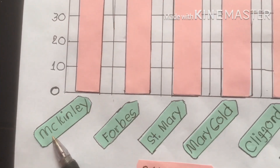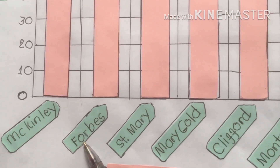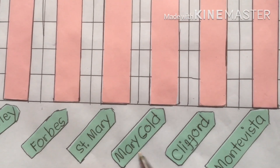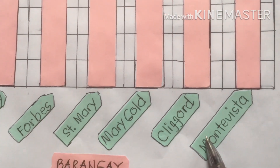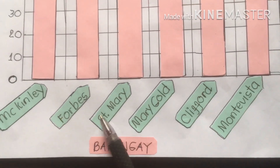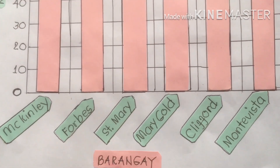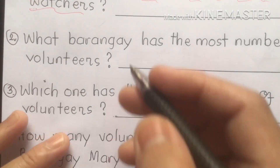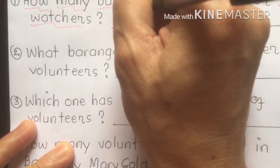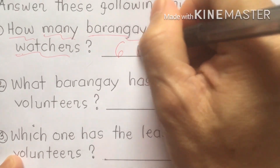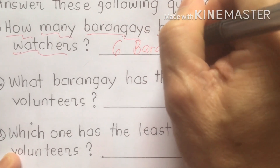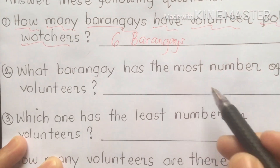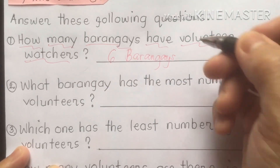We have Mackinley barangay, Forbes barangay, Saint Mary, Marigold, Clifford, and Monte Vista barangay. So the total is one, two, three, four, five, six. There are six barangays with volunteer poll watchers during the election.